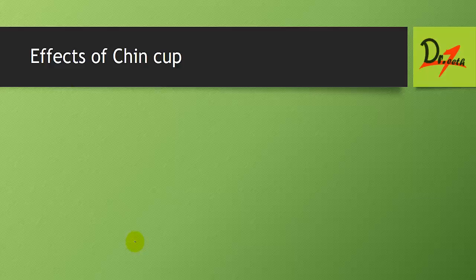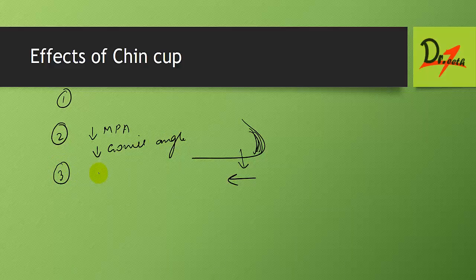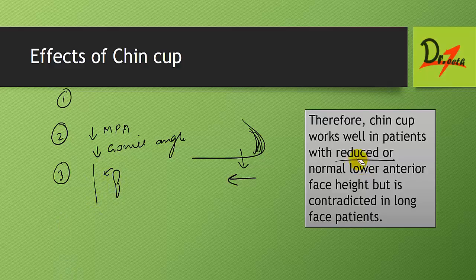The effects of chin cup: first, redirection of mandibular growth downward and backward. Second, remodeling of the mandible, decreasing the mandibular plane angle and the gonial angle. Third, lingual tipping of the lower incisors. Therefore, chin cup works well in patients with reduced or normal lower anterior face height but is contraindicated in long face patients.